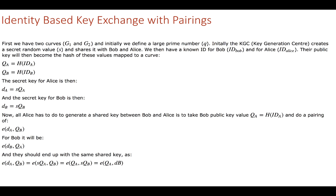Here's the method. The key generation center generates a value S for this connection. Bob doesn't have to contact Alice — the key generation center generates S and shares it with both Bob and Alice. Bob then works out Alice's public key by taking a hash of her identity such as her email address or IP address. Alice works out Bob's public key by taking a hash of his ID. We then have a secret key for Alice.